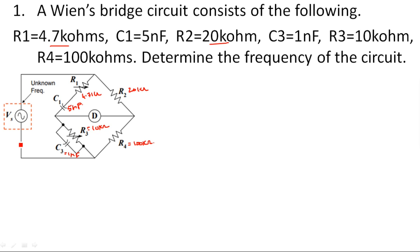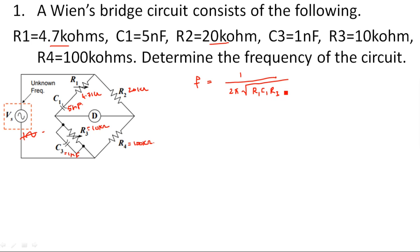You are asked to determine the frequency of the unknown input signal. We need to calculate the frequency using the Wien bridge formula, which is: f = 1 / (2π × √(R1 × C1 × R3 × C3)).